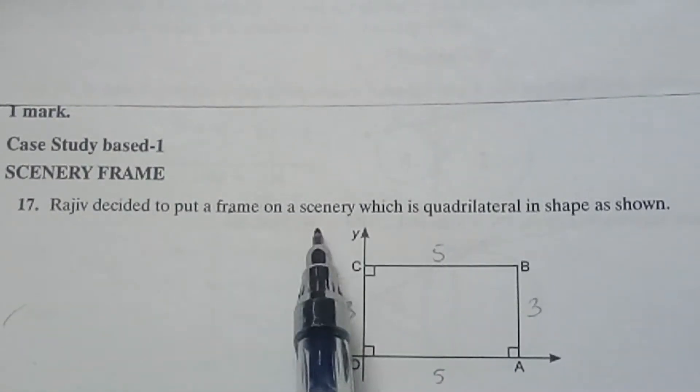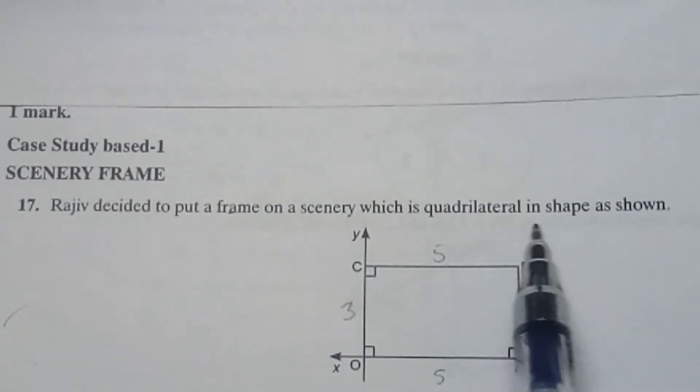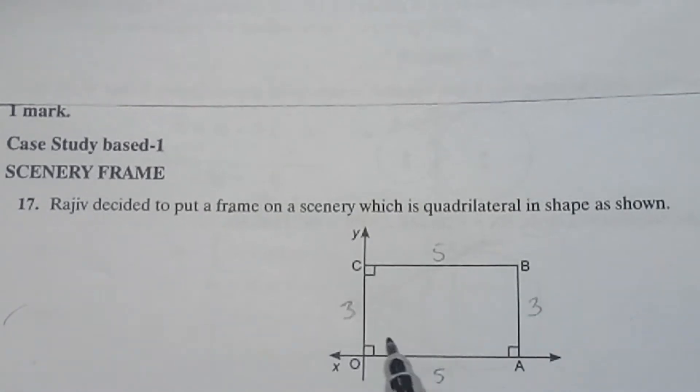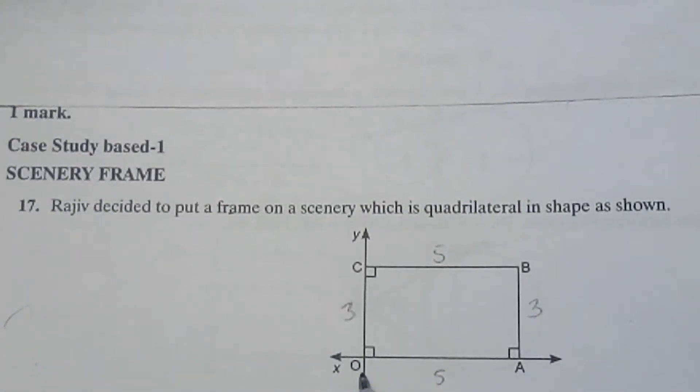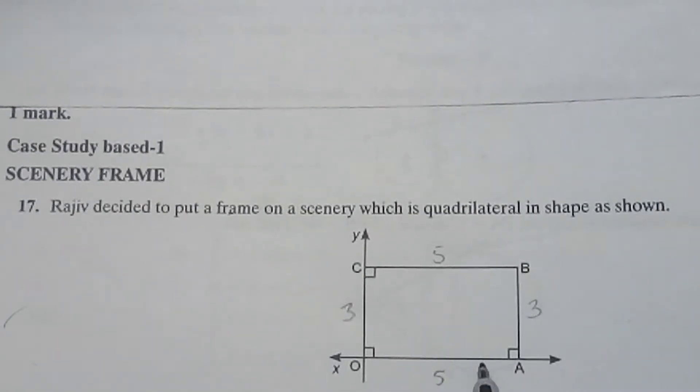Rajiv decided to put a frame on a scenery which is quadrilateral in shape as shown. This is a quadrilateral. Here the two sides are on the axis. OA on X axis and OC on Y axis.